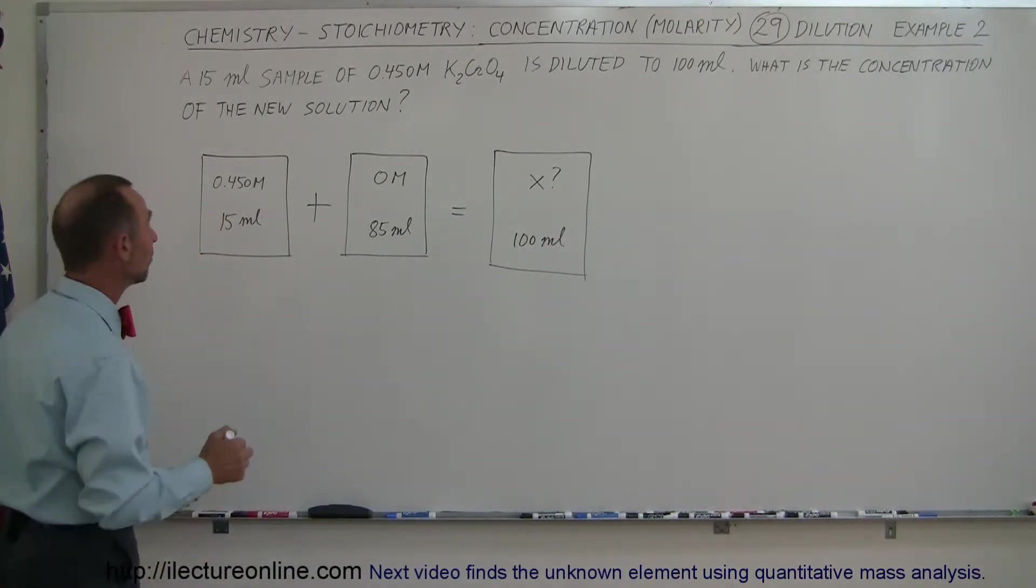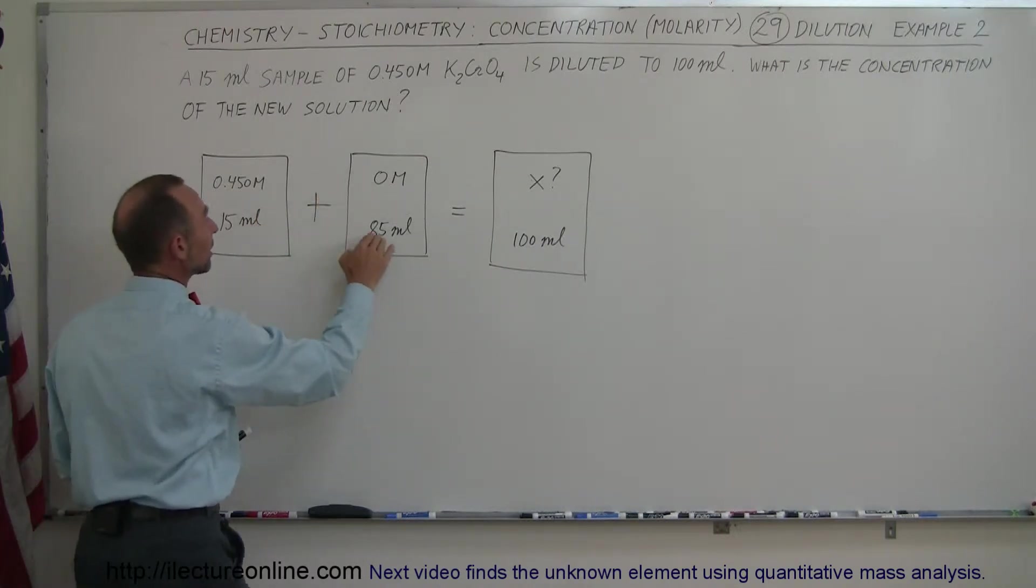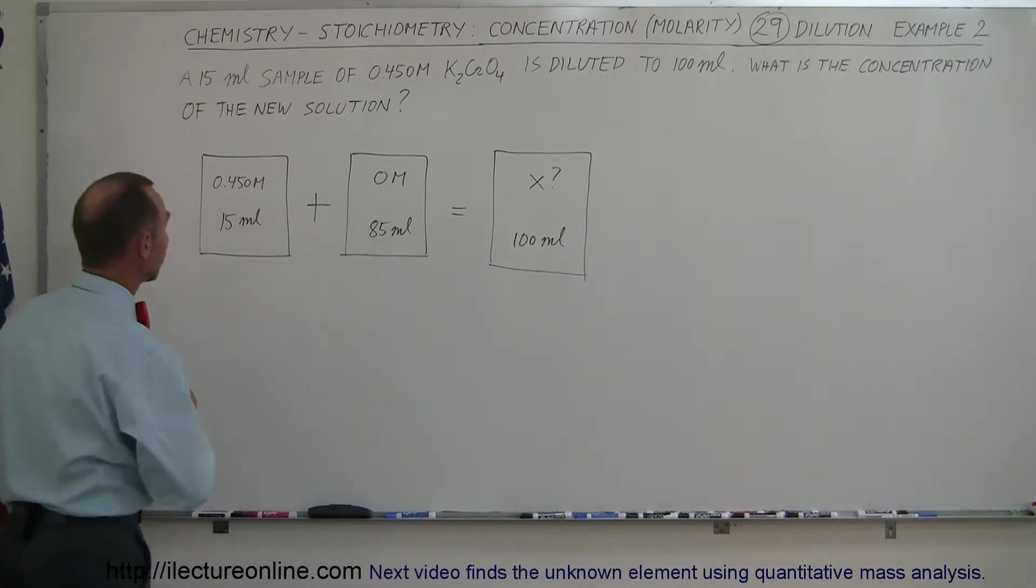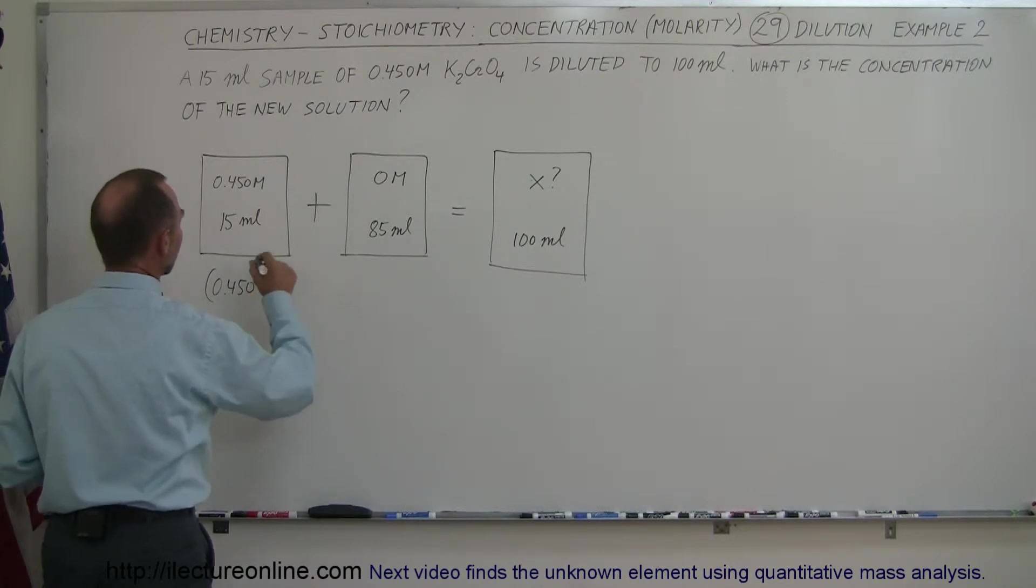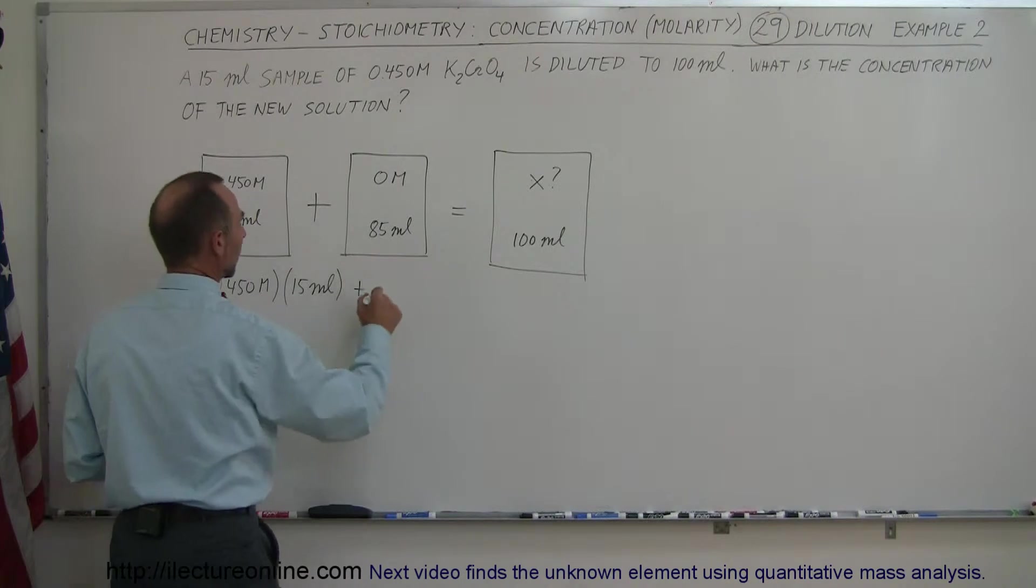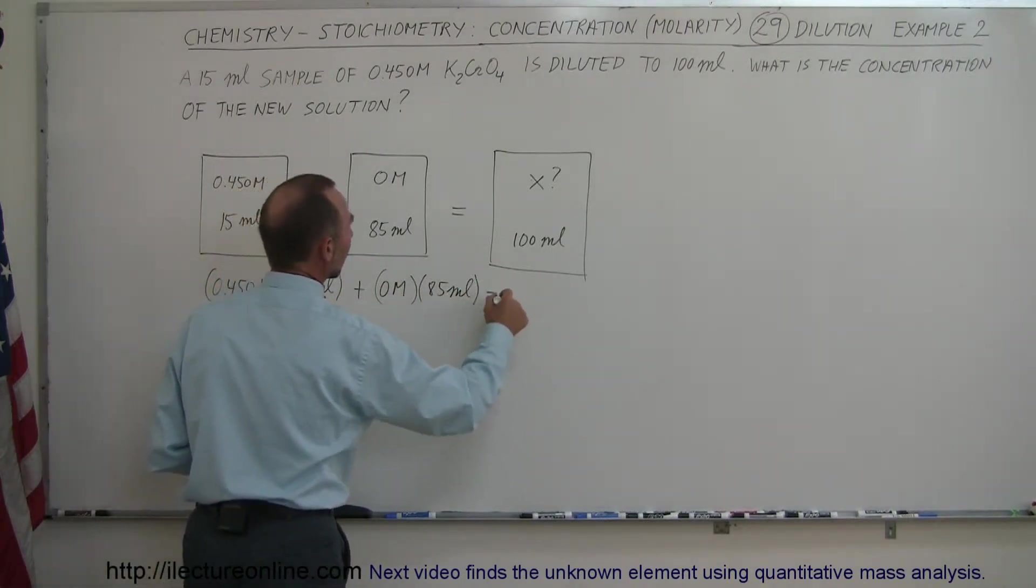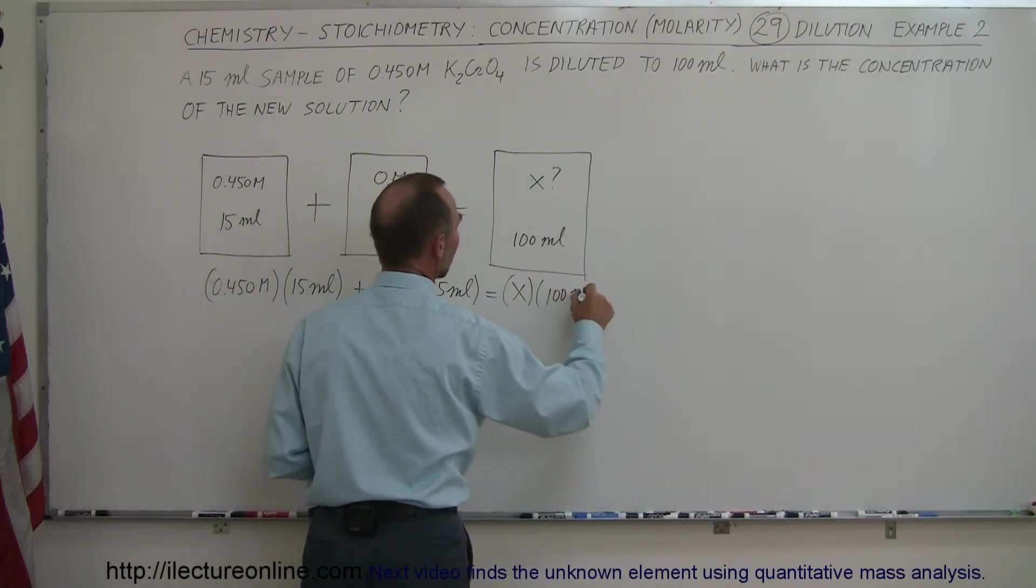So the equation then reads: the molarity times the amount plus the molarity times the amount equals the molarity times the amount of the final solution. So this means that we take the 0.450m multiply times the 15 milliliters plus the molarity, which is 0m times 85 milliliters. And that adds up to x times 100 milliliters.